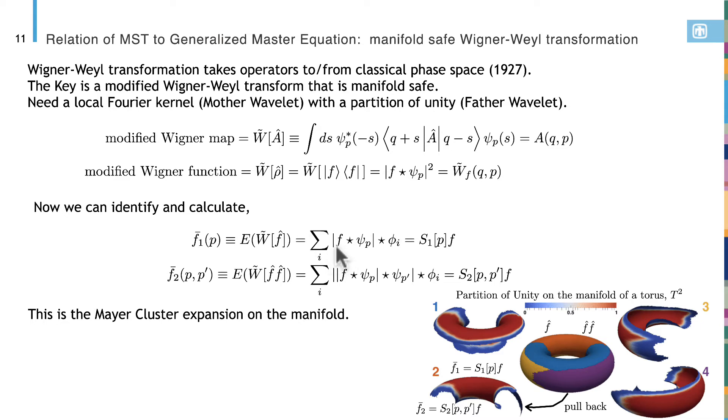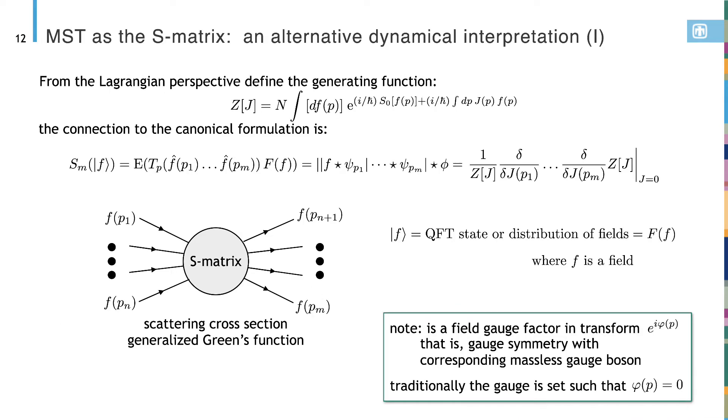Now we want to form the average or expected value of that and also take it of the F rather than the F squared. So we end up finding that we get this form where we have to average it over the father wavelet. But the father wavelets are now set up to form a partition of unity or the patches that will cover the manifold. We sum over those partitions of unity and we have a manifold safe Wigner-Weyl transformation of the density operator. And what is really interesting here is that this is the definition that Stefan had.